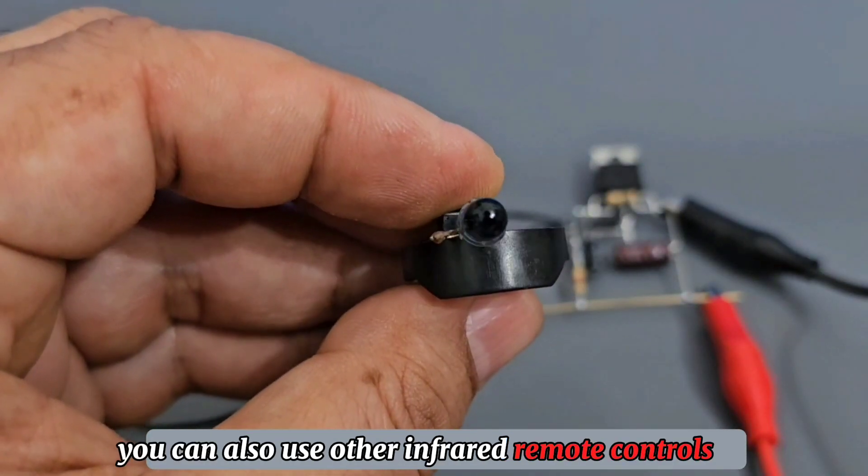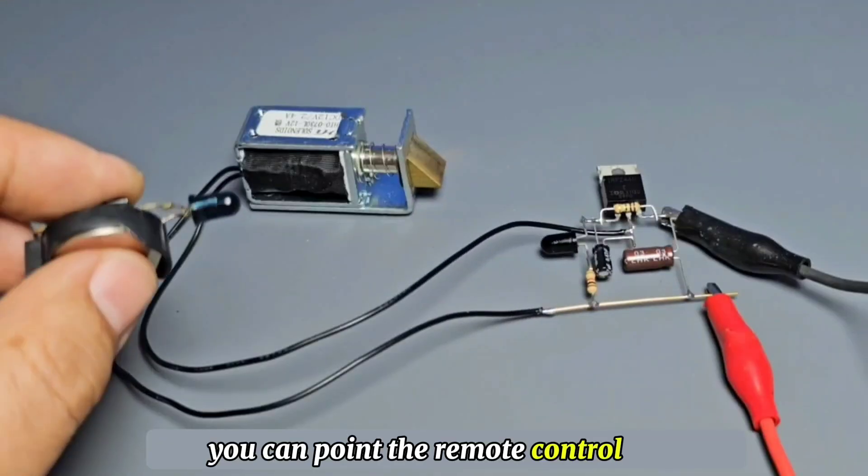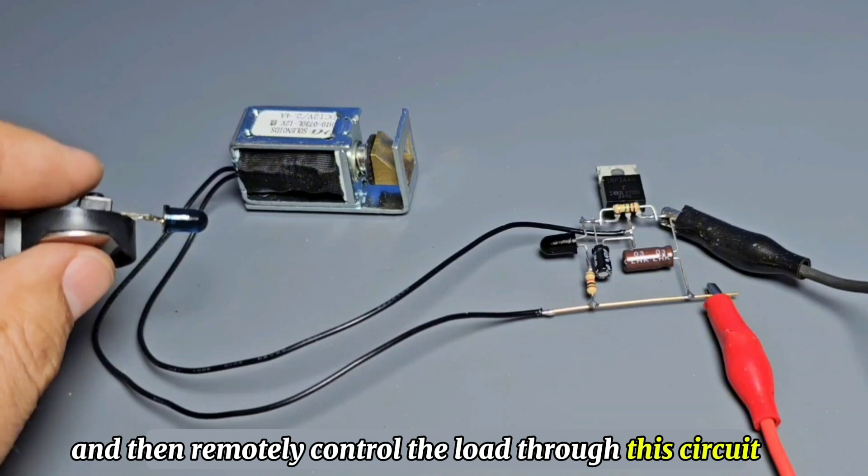You can also use other infrared remote controls such as air conditioners and TVs. You can point the remote control at the infrared receiver and then remotely control the load through this circuit.